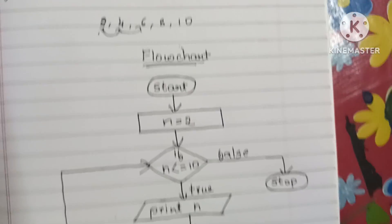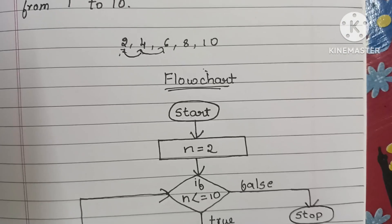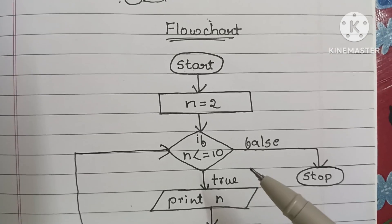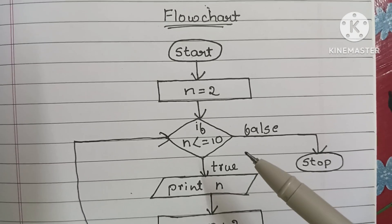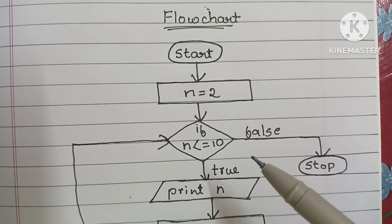So guys, this is the flowchart to print even numbers from 1 to 10. If you like my video, please like and subscribe to my channel. Thank you for watching.